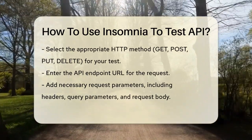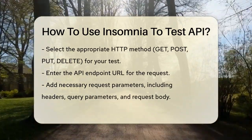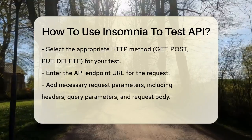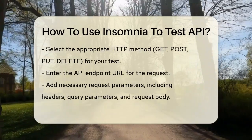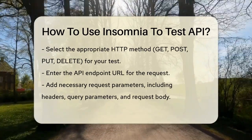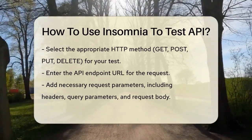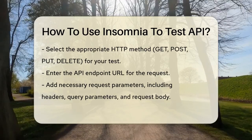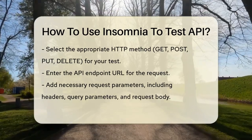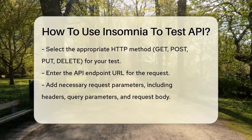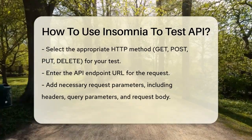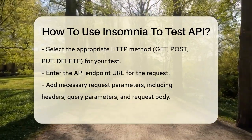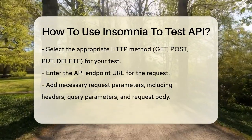If the API requires authentication, you'll need to set that up as well. Insomnia supports various authentication methods such as API keys, OAuth 1.0, OAuth 2.0, and bearer tokens. You can find these settings in the Auth tab.